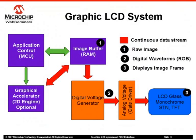I think this is the most important slide in the presentation and I will spend a good amount of time on it, so please pay attention. We need an image buffer to store the raw image that is being displayed. As explained in the previous slide, the size of the image RAM depends on resolution and color depth. The LCD display needs to be refreshed continuously. The graphics LCD system works similarly to a picture tube in a CRT — the display is updated horizontally, line by line. The digital voltage generator block is the digital equivalent of a picture tube.